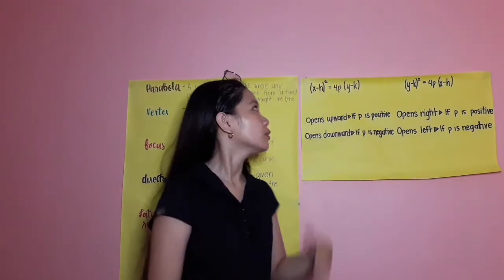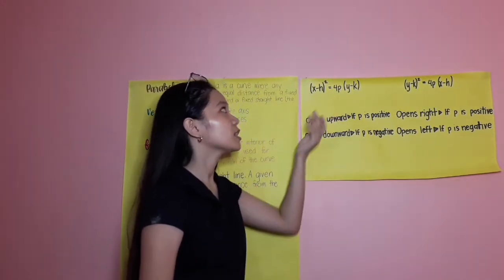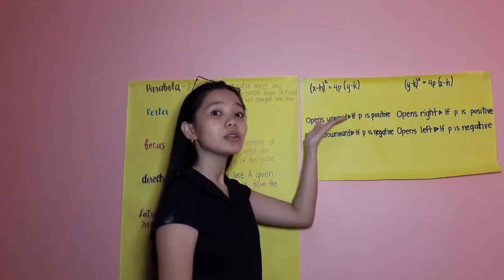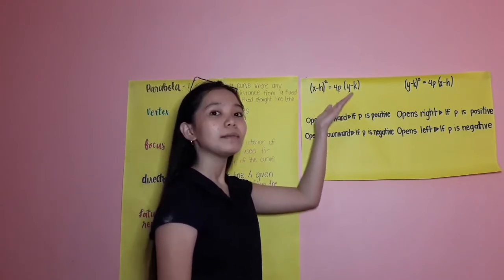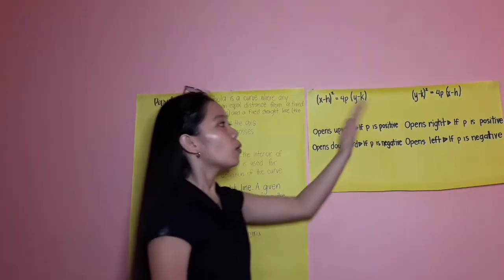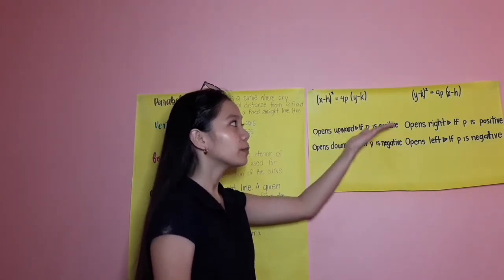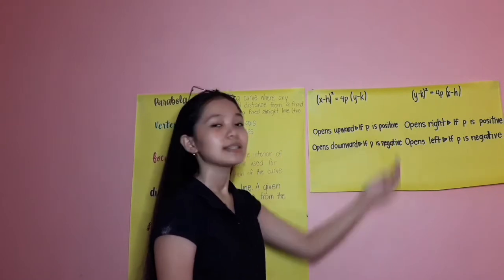We have two equations here which is x minus h squared equals 4p times y minus k, and y minus k squared equals 4p times x minus h.